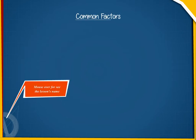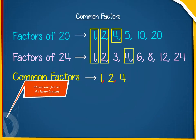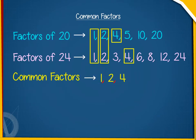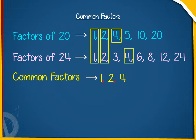Common Factors. When we factorize two numbers, we may find some factors common for both the numbers. These factors are called common factors for both the numbers.